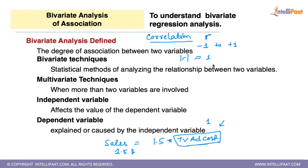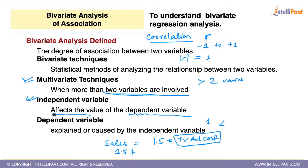When more than two variables are involved, it becomes multivariate. Independent variables are used to affect the value of the dependent variable; their values don't depend on any other variable. The dependent variable is explained or caused by the independent variable.